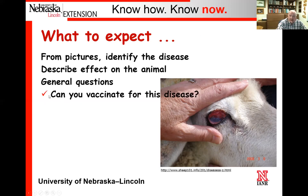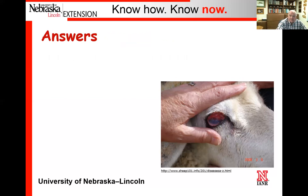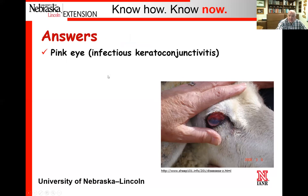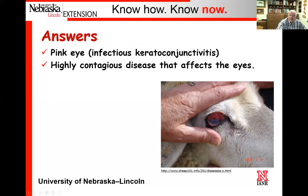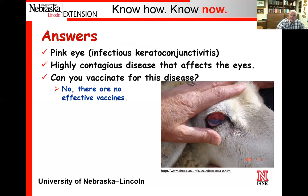For example, can you vaccinate for this disease? This happens to be pink eye — can you vaccinate it? If you go back into that reference, it will say there are no vaccinations that really work for this disease. So, no, you cannot vaccinate. They would have to identify it as pink eye; the scientific term is infectious keratoconjunctivitis. It's a highly contagious disease that affects the eyes, and there's no effective vaccine. That might be an example question related to the disease that we may incorporate.